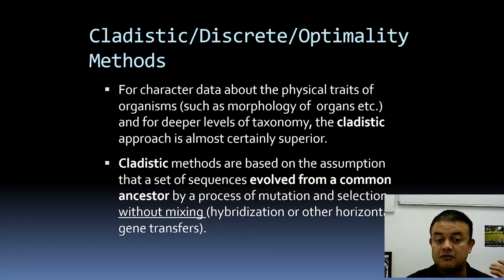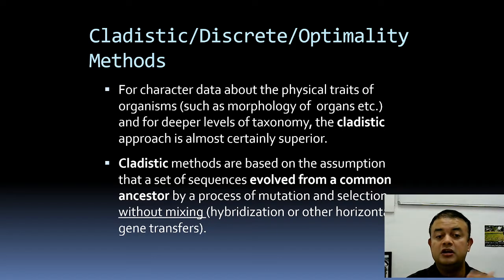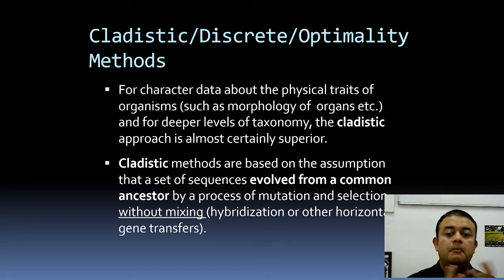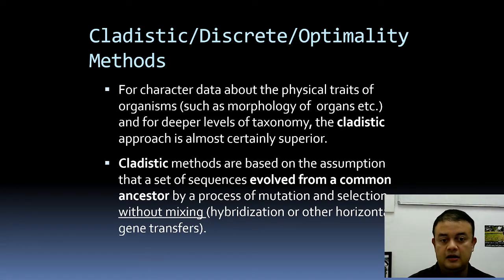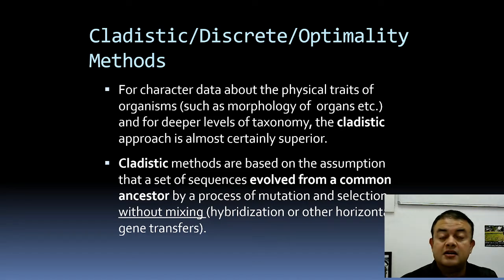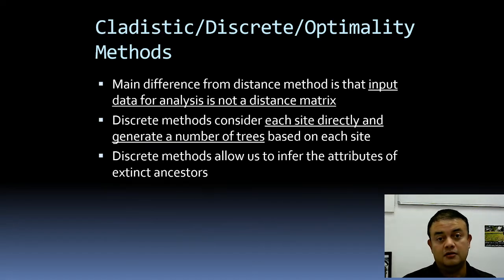These methods are based on the assumption that a set of sequences evolved from a common ancestor by a process of mutation and selection, without mixing, hybridization, or horizontal gene transfer — no intermixing is happening. The process of evolution here is mutation, selection, and drift. The cladistic method is mostly an extension of Darwin's theory of evolution.